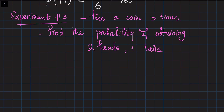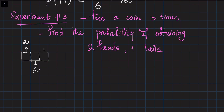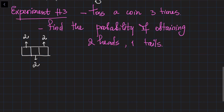If you toss the coin 3 times, how many different outputs might you get? To answer this, we draw three boxes — each box holds the result of one coin toss. The first box has two possible outputs: either heads or tails. The second and third boxes also each have two outputs. So in total, it is a multiplication of all three twos — giving eight different outputs.